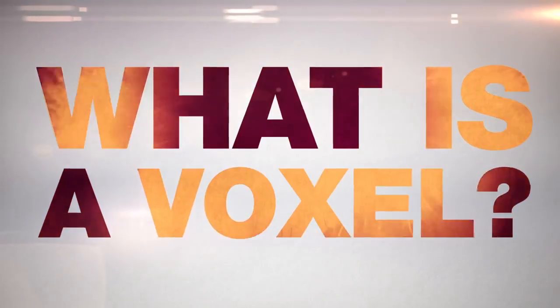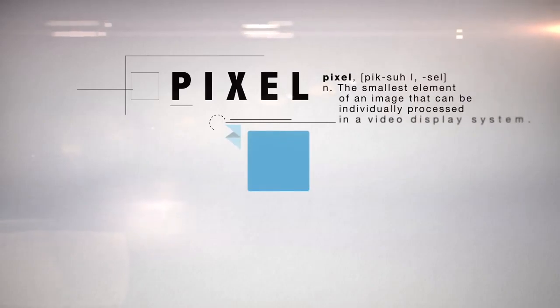What is a voxel? Let's start with the pixel. Every 2D image your eyes see is made up of tiny pixels, different colors working together to create new colors, textures, and patterns.